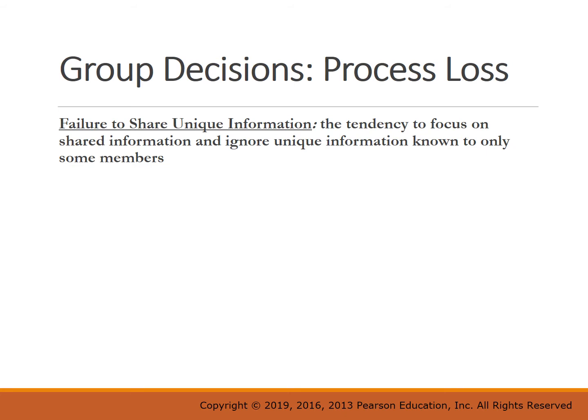Failure to share unique information is a tendency of the group to focus on their shared information and to ignore unique information known only to some members. For instance, the expert might know more than several other members of the group, but the group will end up ignoring that information because it's not shared among all group members.